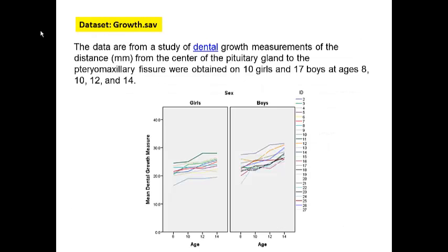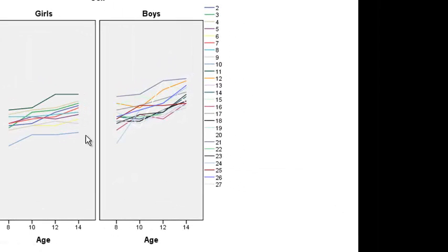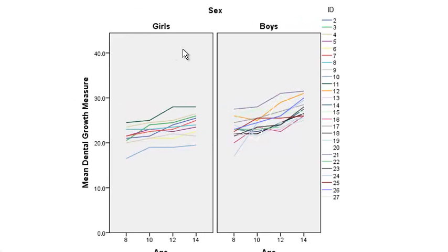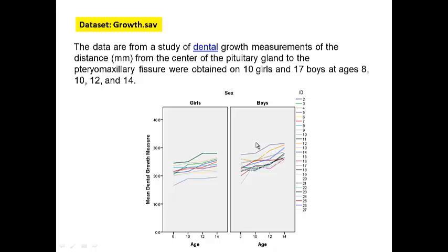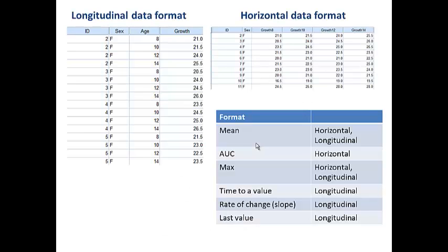The data involved measurements of dental growth on 10 girls and 17 boys at ages 8, 10, 12, and 14. So for each boy or girl, measurements were taken four times over a two-year time interval. We are interested in comparing this growth between boys and girls, so we are going to create summary measures on this dataset.